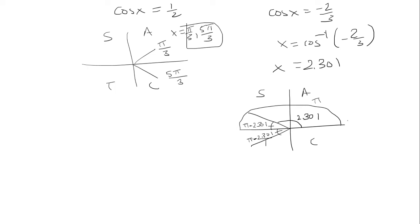Now, to find out what the actual angle is, to go here, we first have to take pi and add it to this angle. Which is essentially the same thing as taking 2 pi subtracting 2.301.